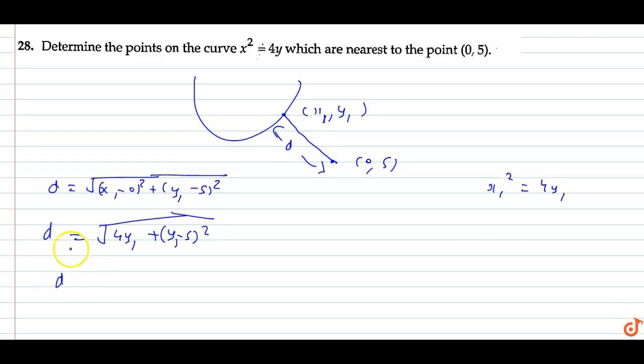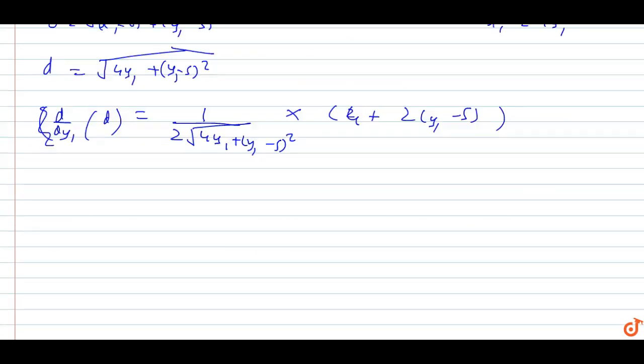What will we get? d/dy₁(d) = 1/(2√[4y₁ + (y₁ - 5)²]) × [4 + 2(y₁ - 5)] = 0.